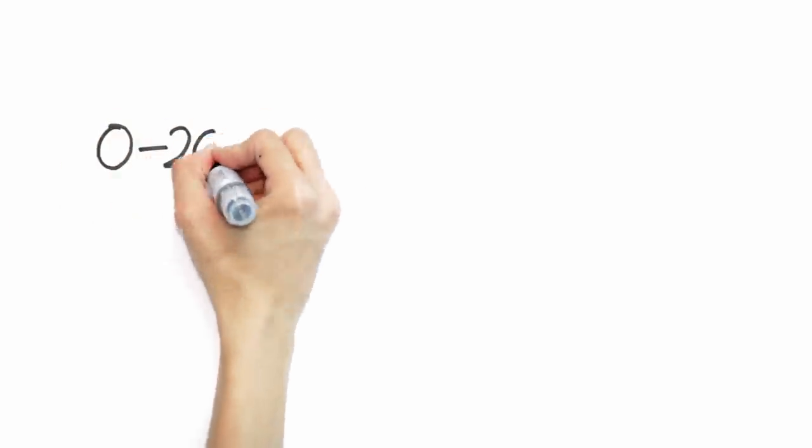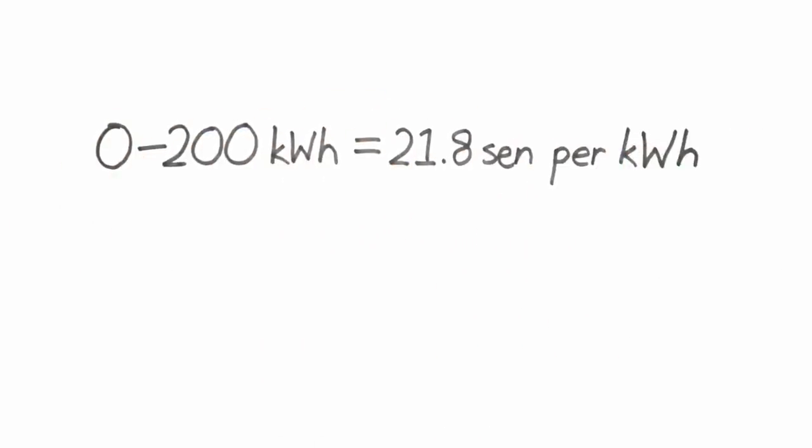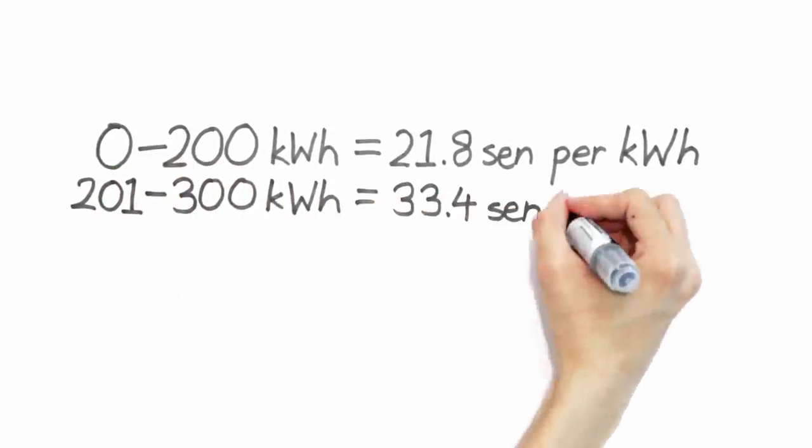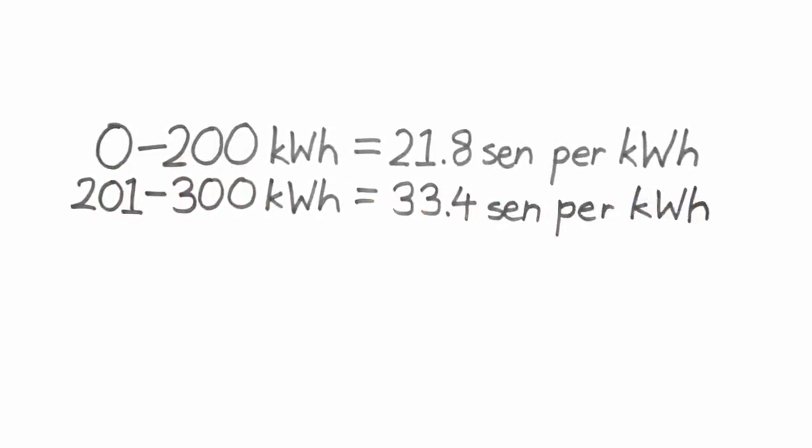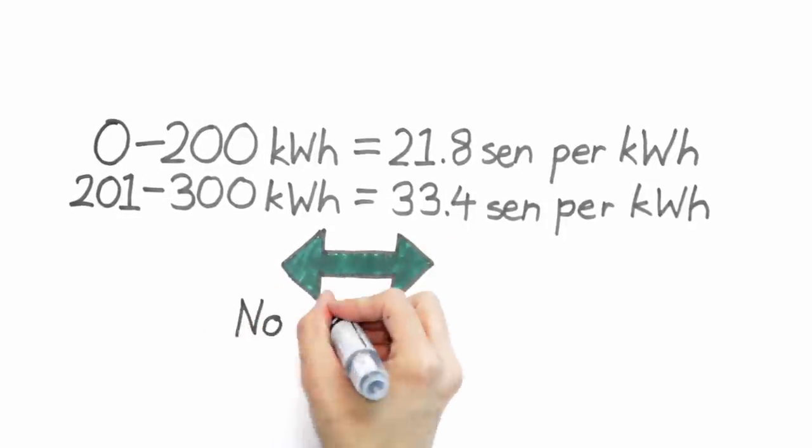The first 200 kilowatt hour we consume is charged at 21.8 cents per unit. The following 100 kilowatt hour is charged at 33.4 cents per kilowatt hour. There will be no tariff increase for the first 300 kilowatt hour used.